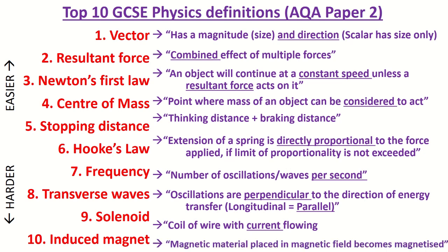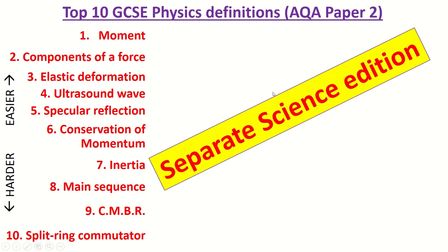A solenoid is a coil of wire with current flowing in it, and an induced magnet is a magnetic material that's placed in a magnetic field and becomes magnetized. For example, a paperclip near a magnet becomes its own mini magnet.